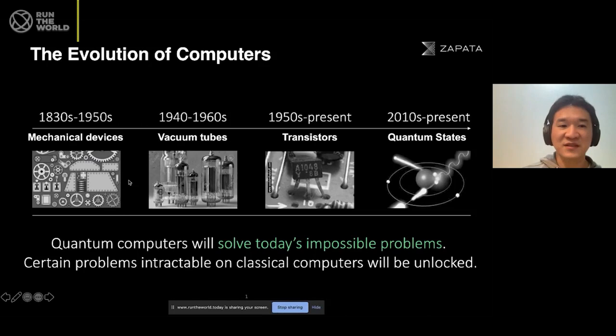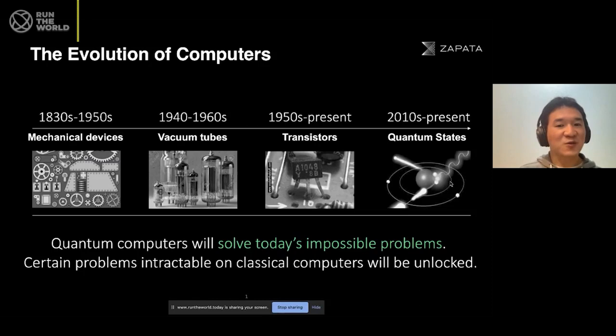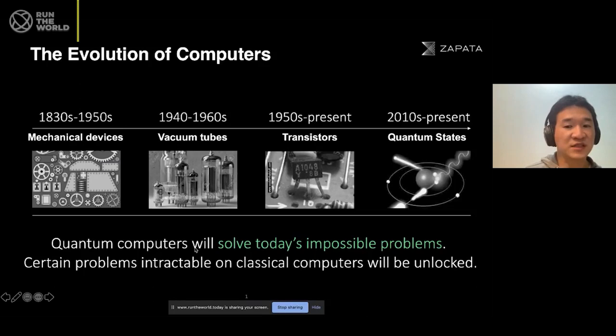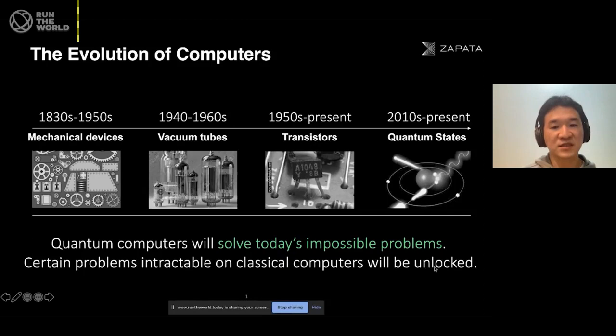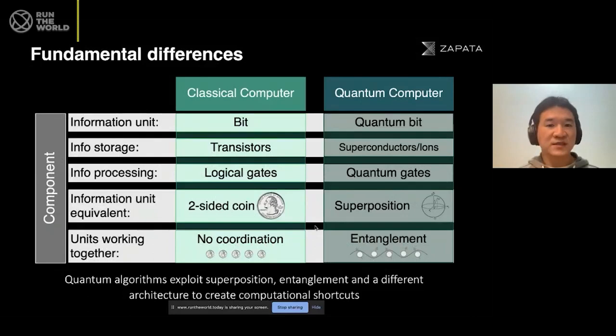This slide is a little misleading, because it suggests the evolution of transistors leads directly to the quantum computer and quantum states. But it's not quite that way — it's a split. It's a completely different way of computing things. Quantum computers will solve today's impossible problems. Certain problems intractable on classical computers will be unlocked. And what we're referring to by classical computers are the transistor-based computers, such as our smartphones and laptops.